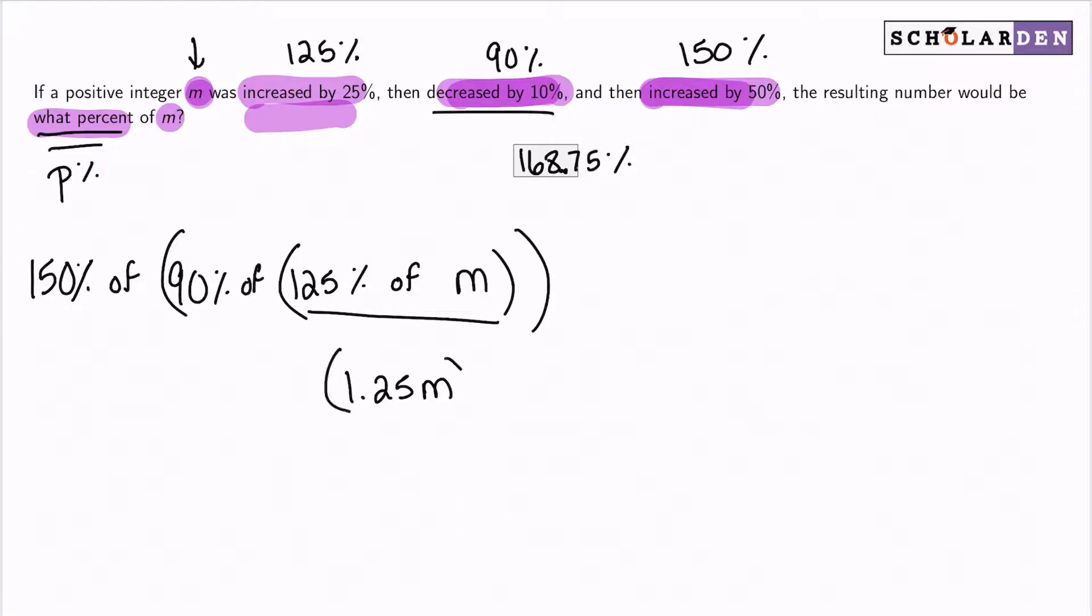Up next, 90% translating that as 0.9. And then lastly, 1.5 for 150%. So in order to discover what percent of m this is, well, this will result in p percent.